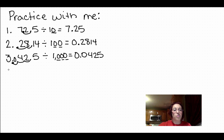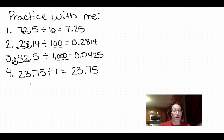Let's do a few more together before you do some on your own. 23.75 divided by one. We have no zeros, so we don't move our decimal place at all. It's going to be 23.75.